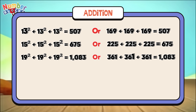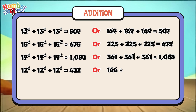12 square plus 12 square plus 12 square is equals to 432, or 144 plus 144 plus 144 is equals to 432.